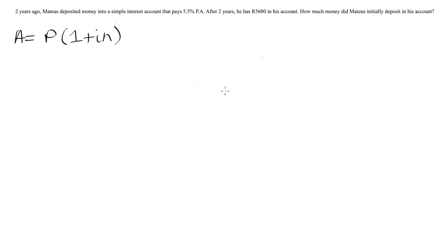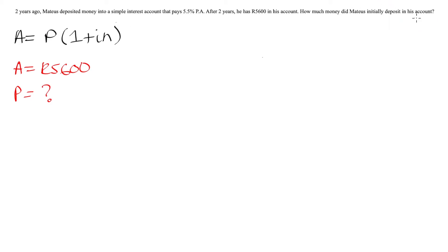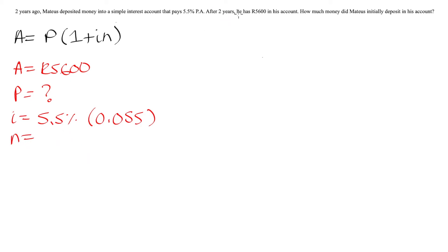A is the amount in his account after two years of interest at 5.5% per year, so A equals 5,600 Rand. P is what we are trying to calculate — the amount he initially deposited. The interest rate I is 5.5% per annum, which is 0.055 in decimal form. N is the number of years: 2 years.